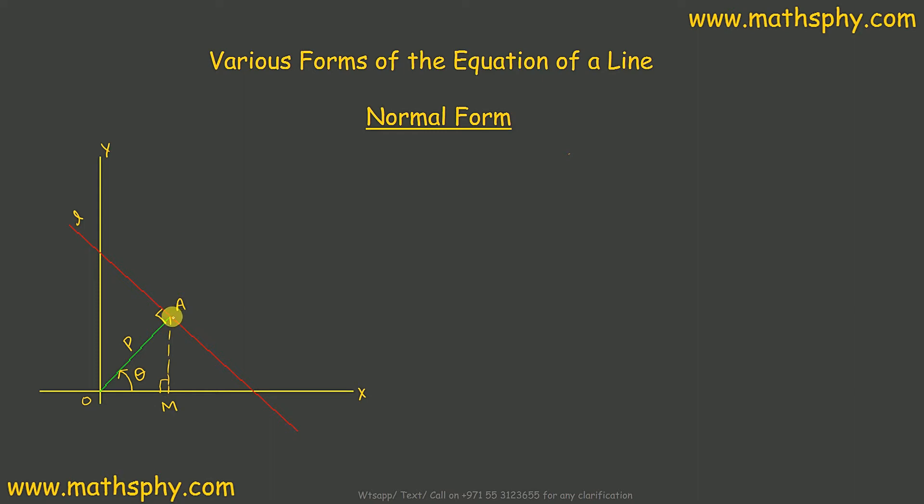I see. If I need to find out what would be the coordinates of point A: If I write the value of cos theta here, this would be OM over P, adjacent over hypotenuse. In this case, OM would be equal to P cos theta.